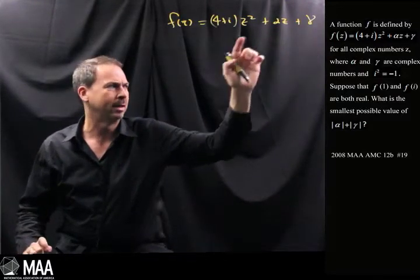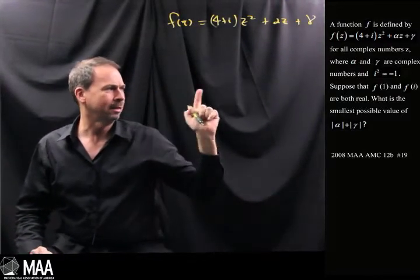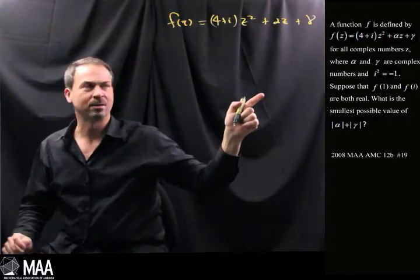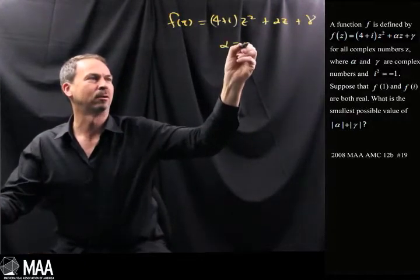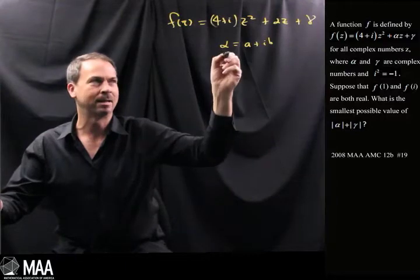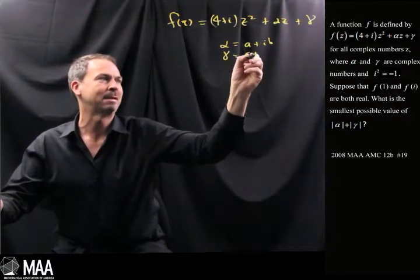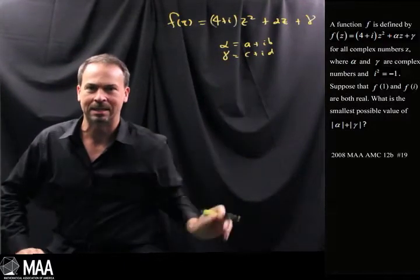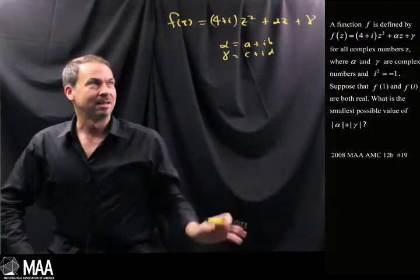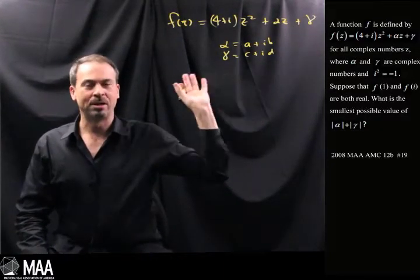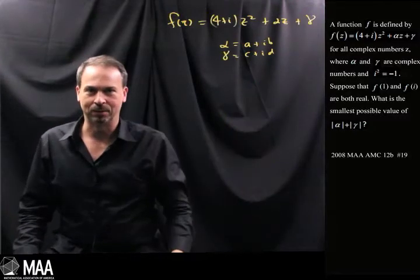There's alpha and this gamma stuff. The question says they're complex numbers. So alpha is its own little complex number, a+ib say, and gamma is its own complex number, c+id, where a, b, c, and d are reals. So there's a ghastly-looking formula putting complex inputs, outcome complex outputs.